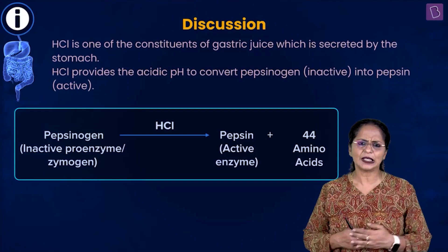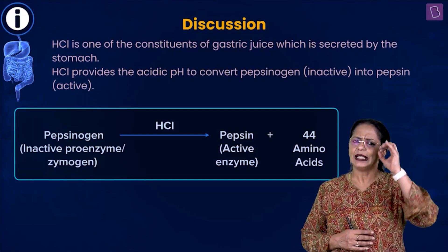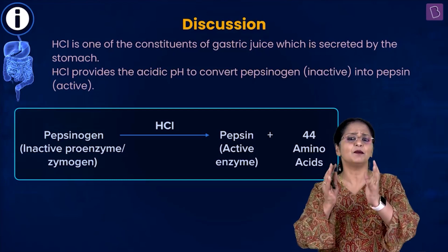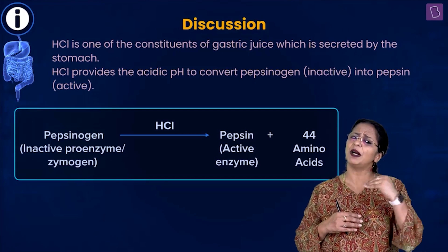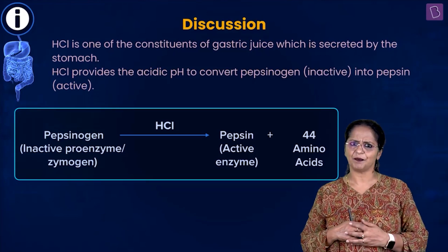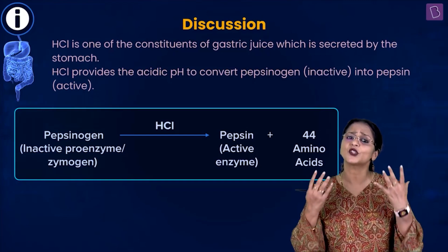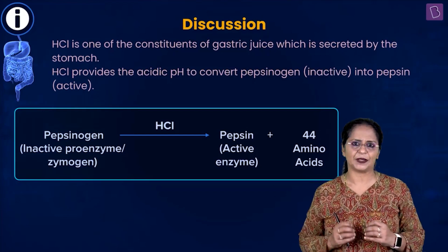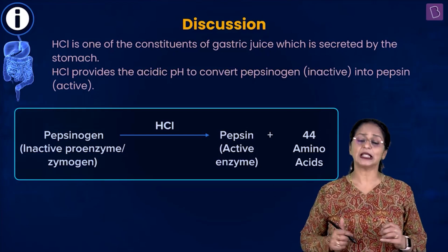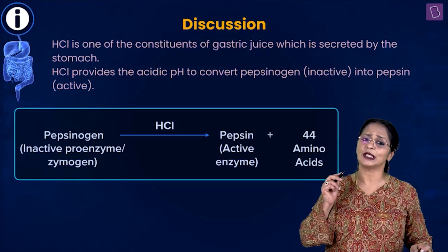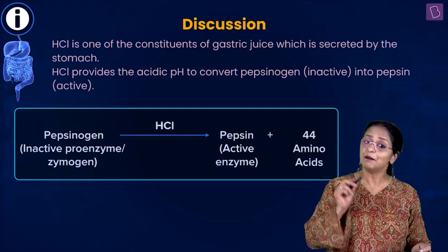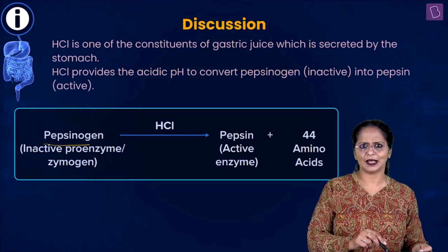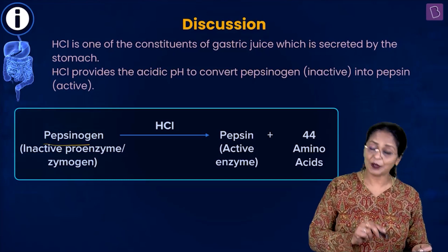HCl is secreted by the parietal cells, also called oxyntic cells, found in the gastric glands lining the stomach. It is the major component that gives an acidic environment to the stomach — the pH of the stomach is much below 7, highly acidic. This is necessary because protein digestion takes place here, and for protein digestion we need the enzyme pepsin.